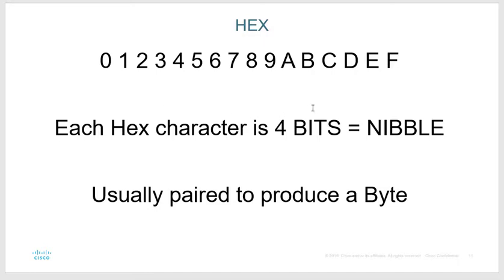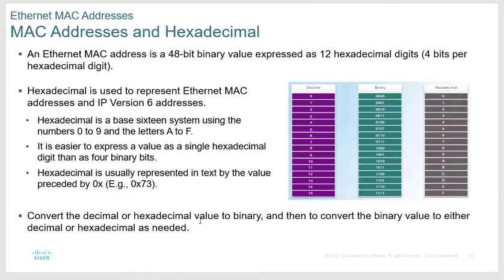Each hex character is four bits, and four bits is called a nibble. They're usually paired to produce a byte. Going back to the slide, you can see they're paired — like 7 and 3.